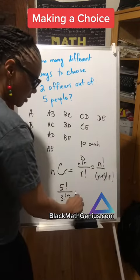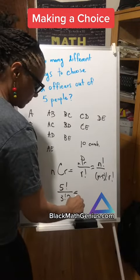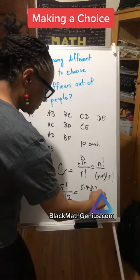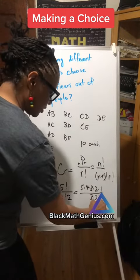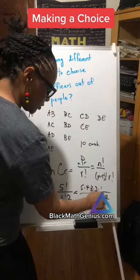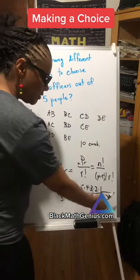So when you do this math here, you're going to get 5 factorial, 5 times 4 times 3 times 2 times 1 over 3 times 2 times 1 times 2. Cancel, cancel, cancel, cancel. 5 times 4, 20, 20 divided by 2, 10.